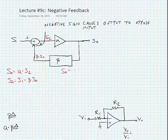S_out is equal to A times (S_i minus beta times S_out), and some algebraic manipulation yields our expression for gain S_out over S_i. This is equal to A divided by (1 plus A times beta).